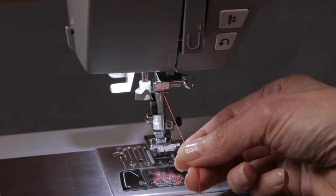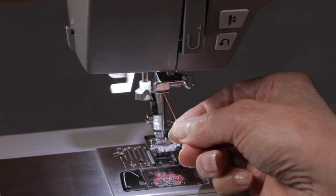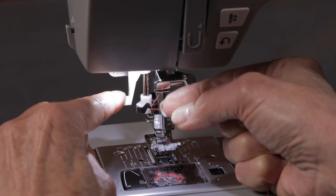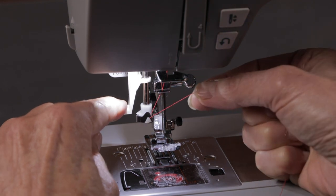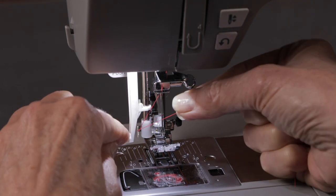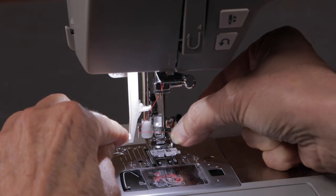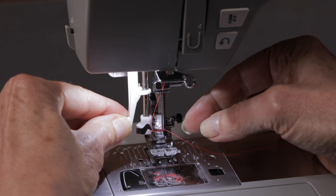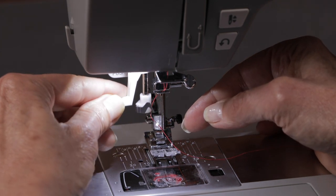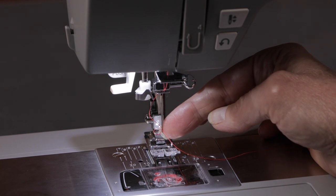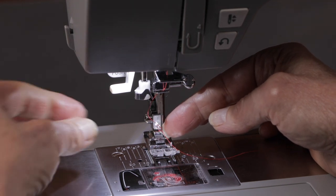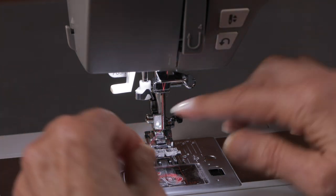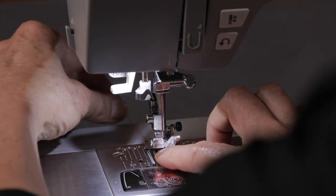You can thread the needle manually or you can use your built-in needle threader. To use your needle threader, first bring your thread around this hook on the mechanism and push the needle threader all the way down. Bring the thread in front of the needle. Then release the needle threader until you see this small loop in the back of the needle. Pull the loop.